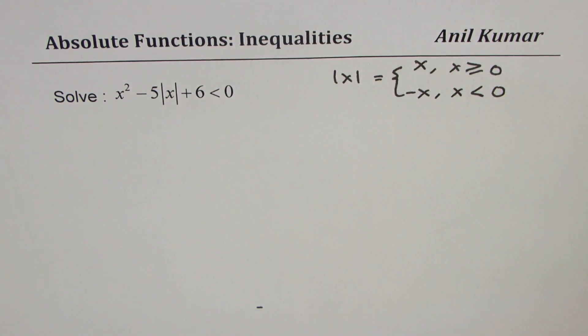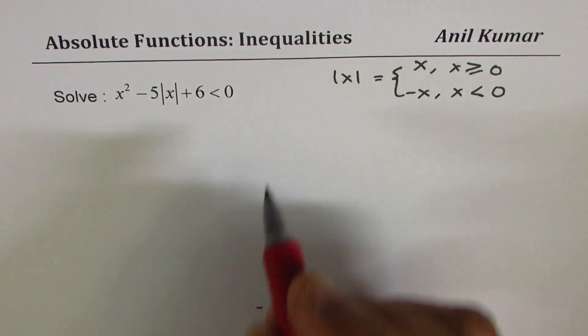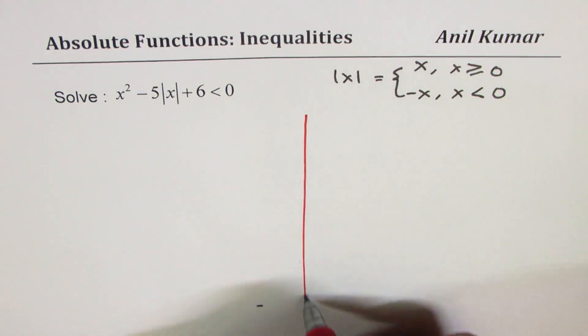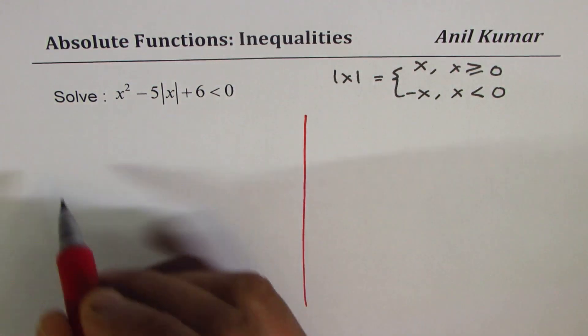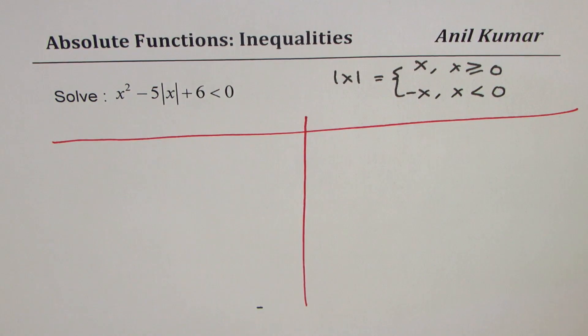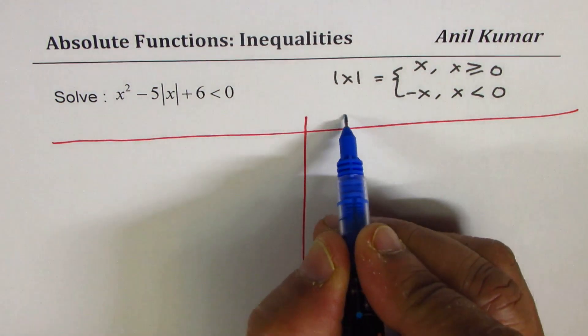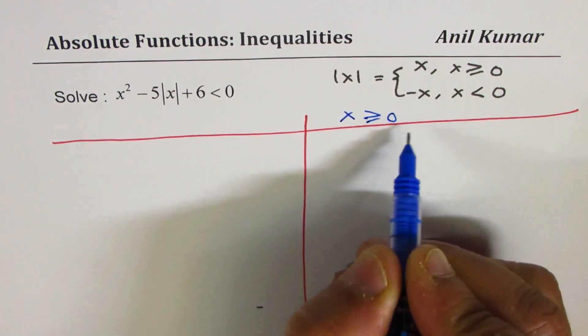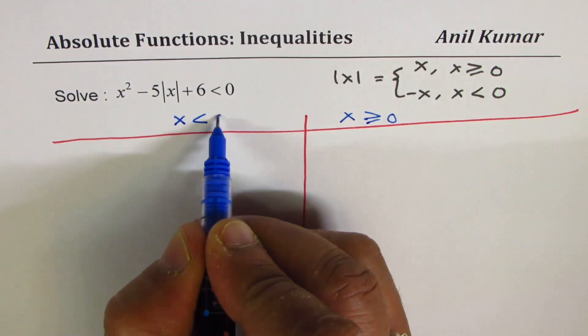That reminds you that you can actually solve it as a piecewise function where x is greater than zero or x is less than zero. So that is how we are going to do it. Let's say x is greater than equal to zero and x is less than zero.